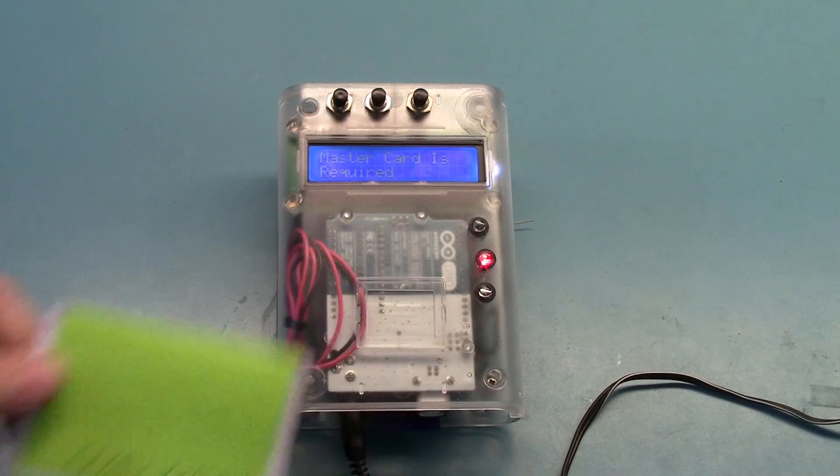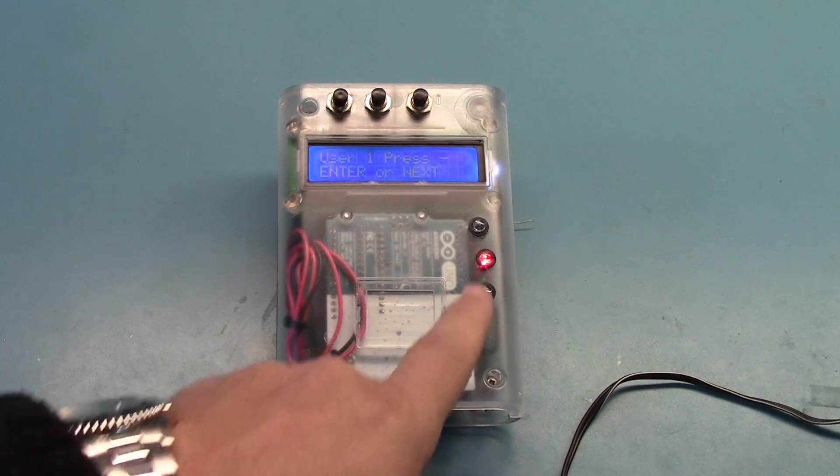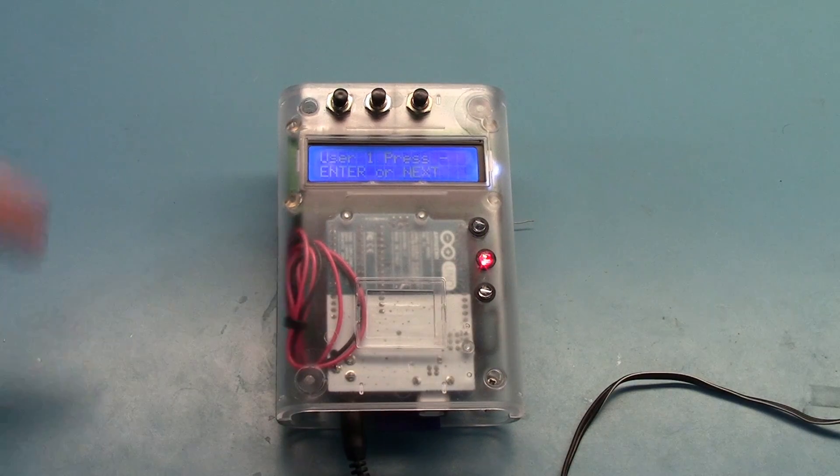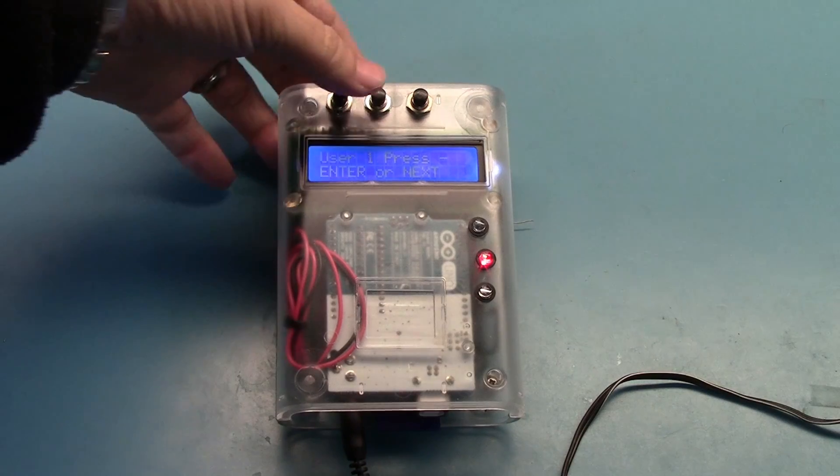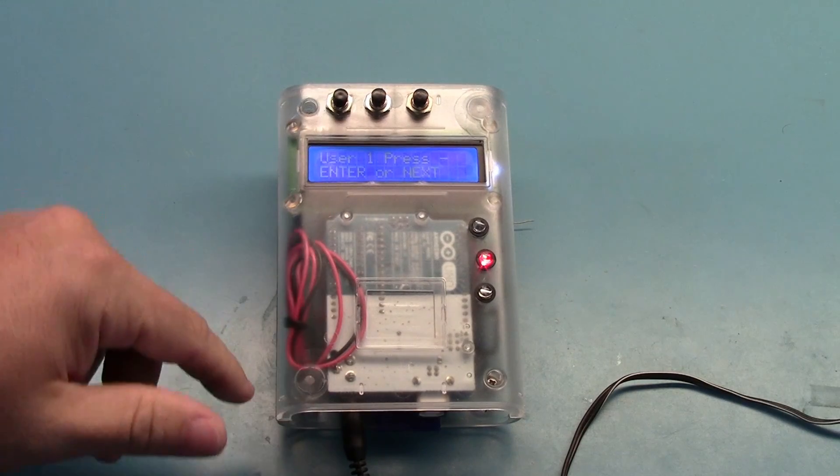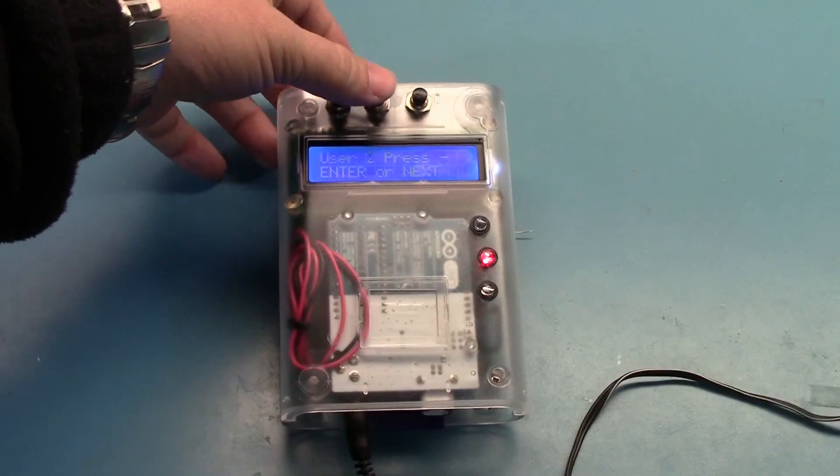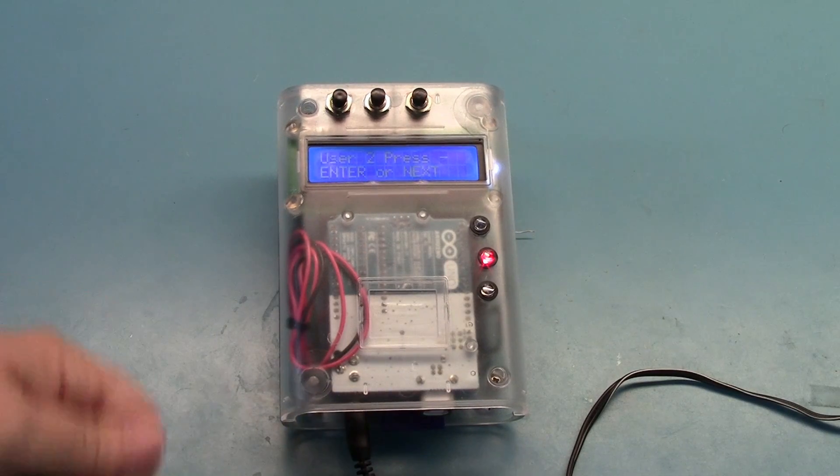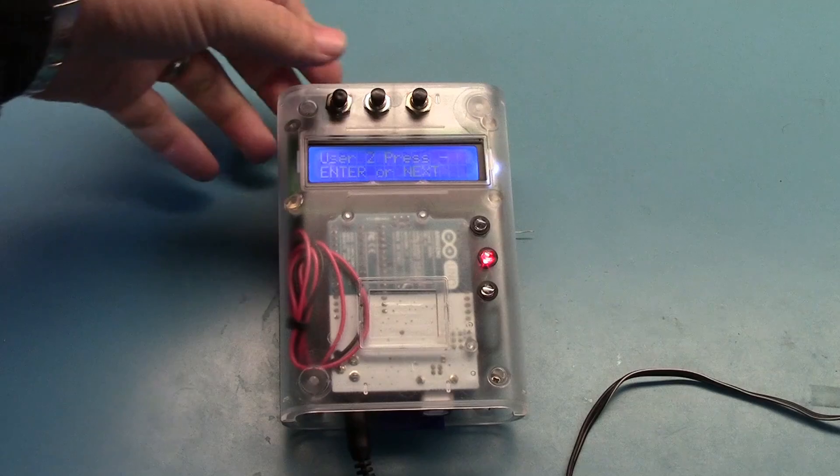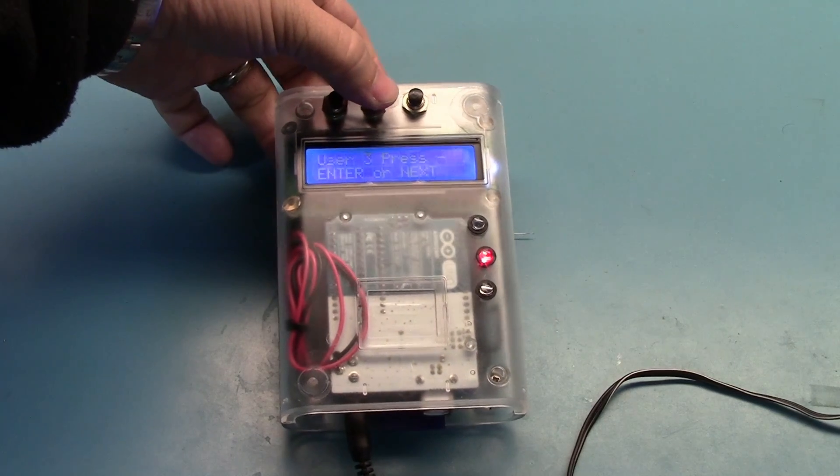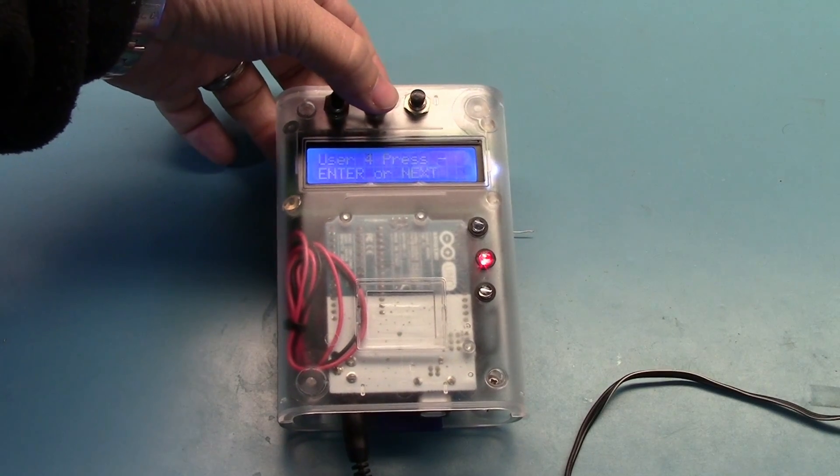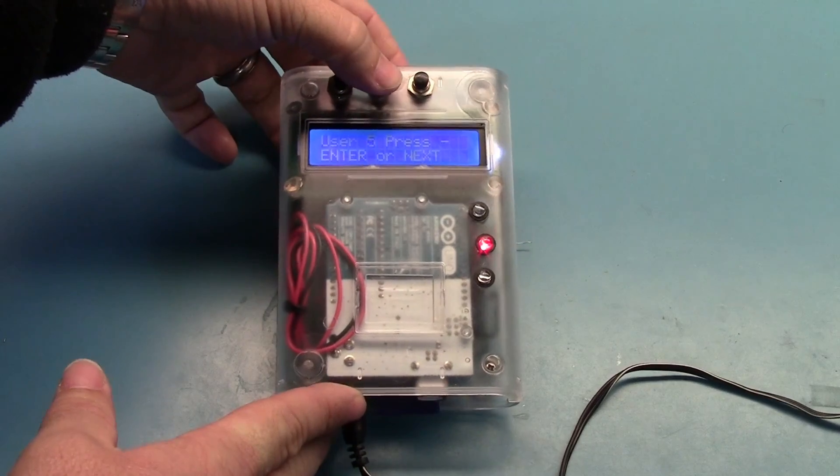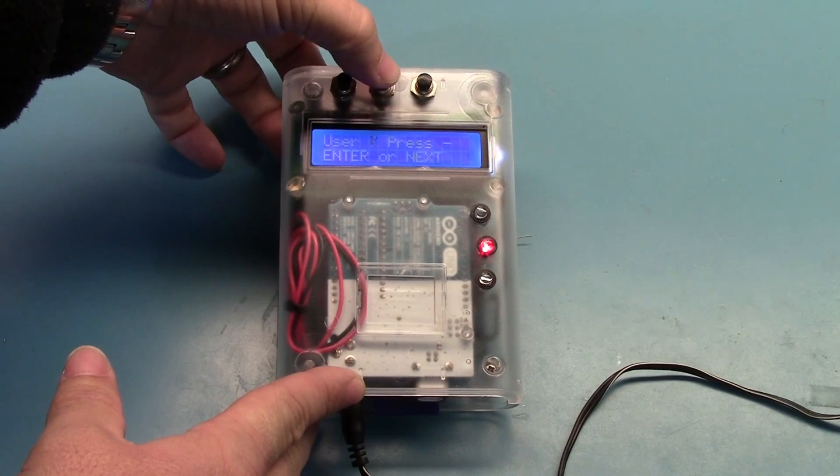We'll have the master card. We'll swipe in. Now we're still in a timeout. If we don't do something after a while, it's going to time out and go back to a ready to read state. So I've got a red LED letting us know that we're not ready to swipe and that we're in our program mode.